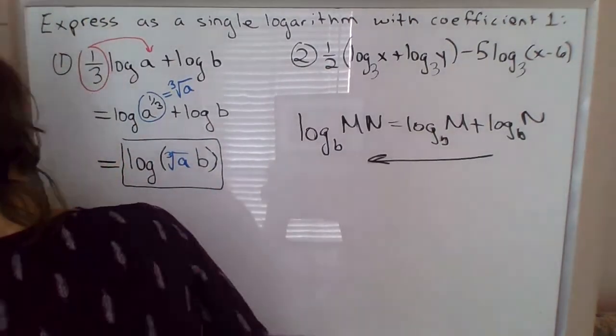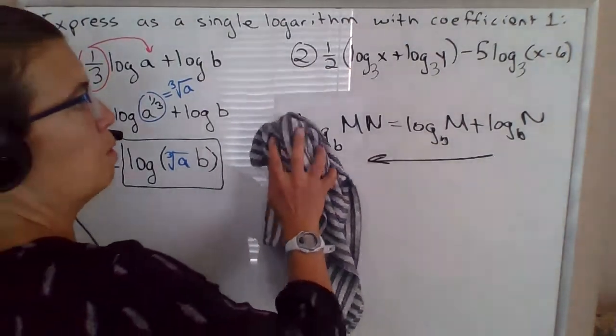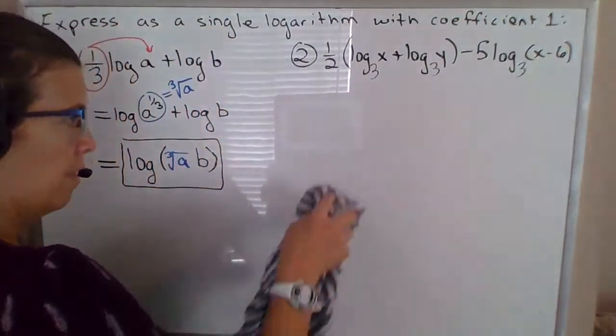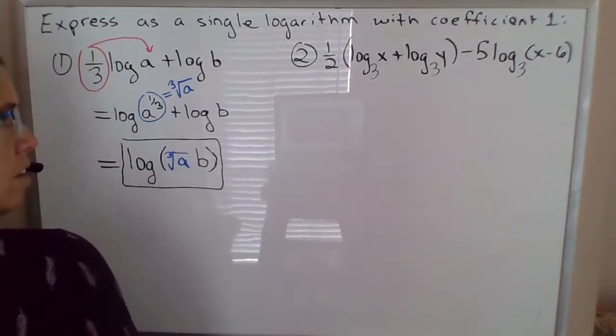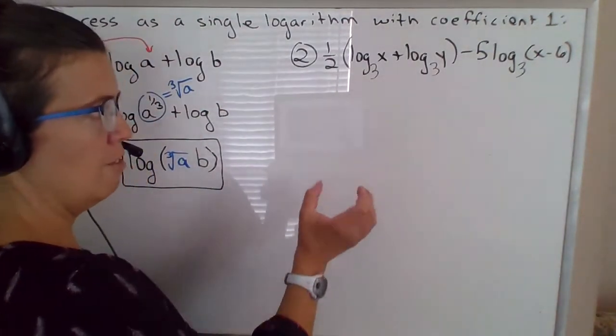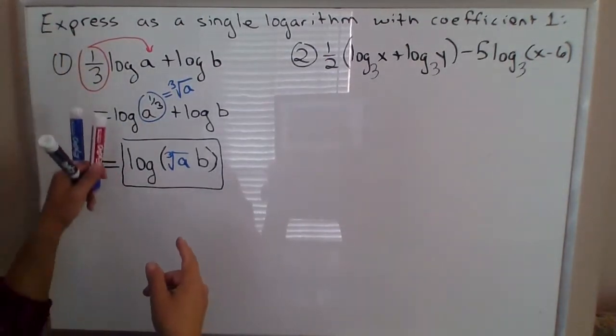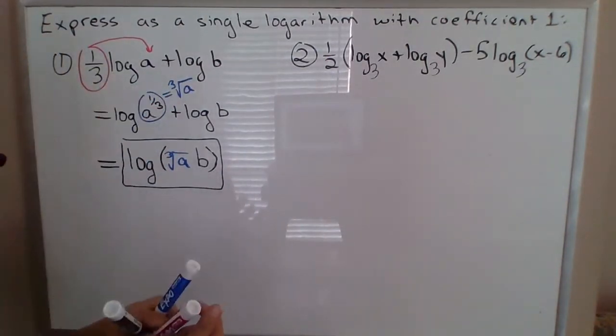All right, so I'm going to move over to example number two. I'm going to get this property out of the way. Now we have to be careful over here, because I know in this previous example I gave you the advice that okay, coefficients, fold those up first.